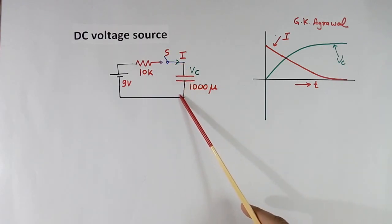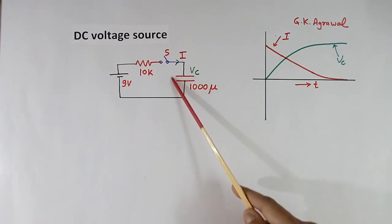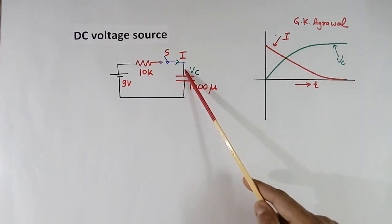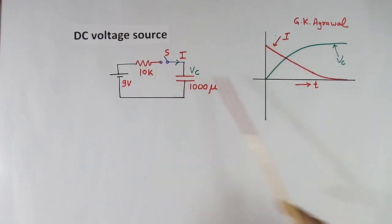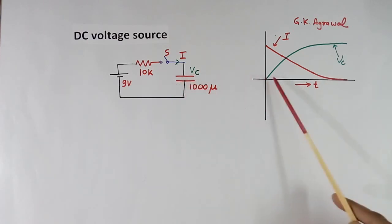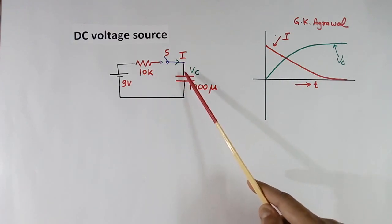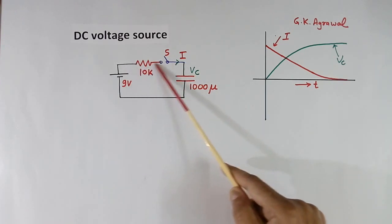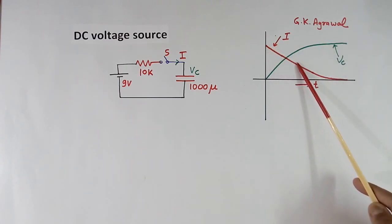Now when current flows, this capacitor will start charging. So in the beginning, voltage across this capacitor will be 0 — this is the voltage line, this is the current line — so voltage will be 0 and current will be maximum. As it charges with time, voltage across capacitor will increase slowly and current will start reducing. Because when capacitor charges, voltage across this resistance will come down and current will reduce. So after closing the switch, we see voltage will increase and current in capacitor will come down slowly.